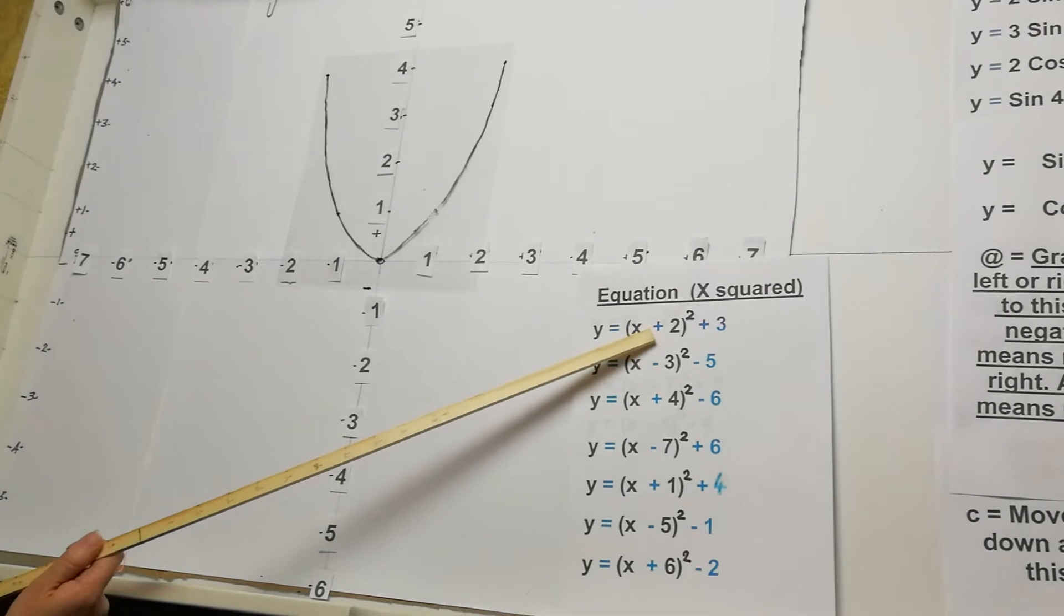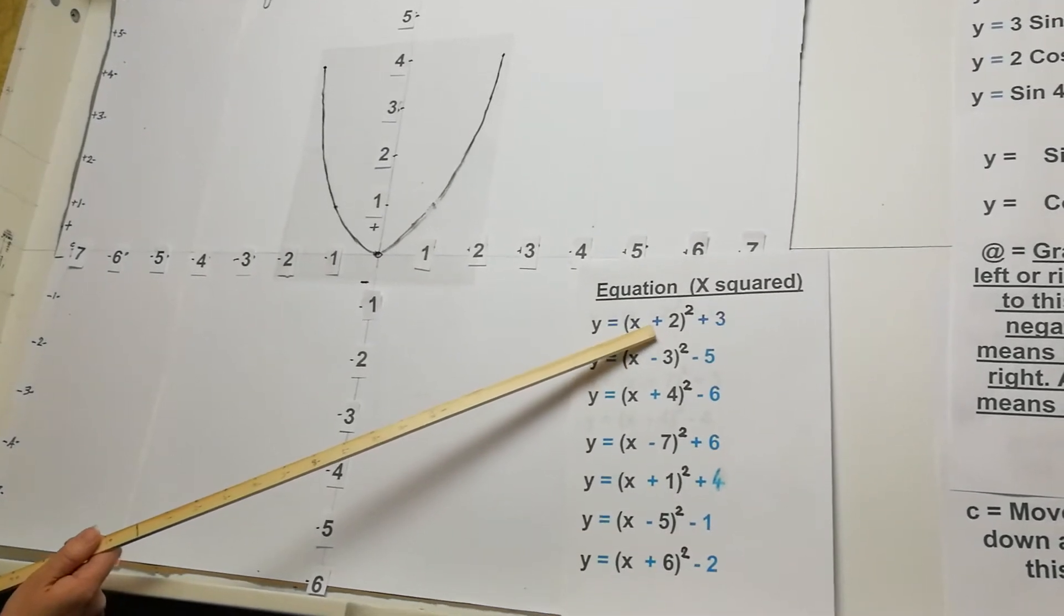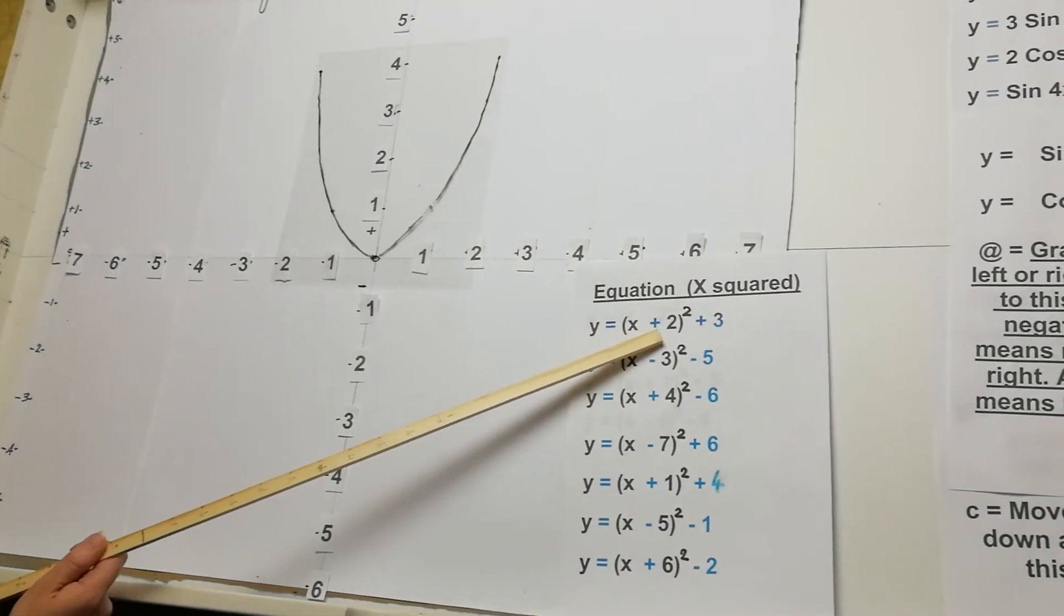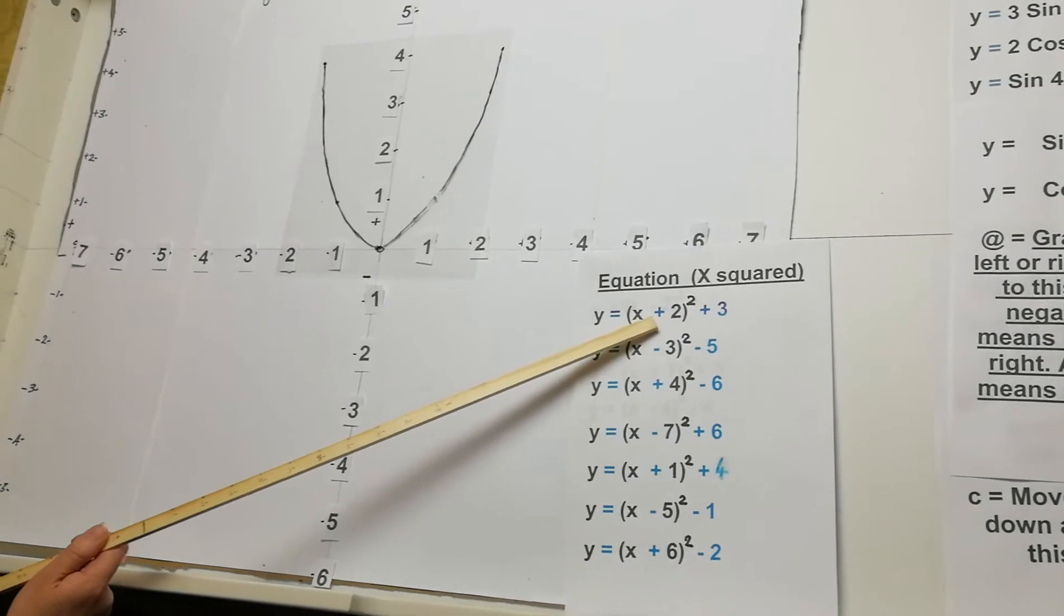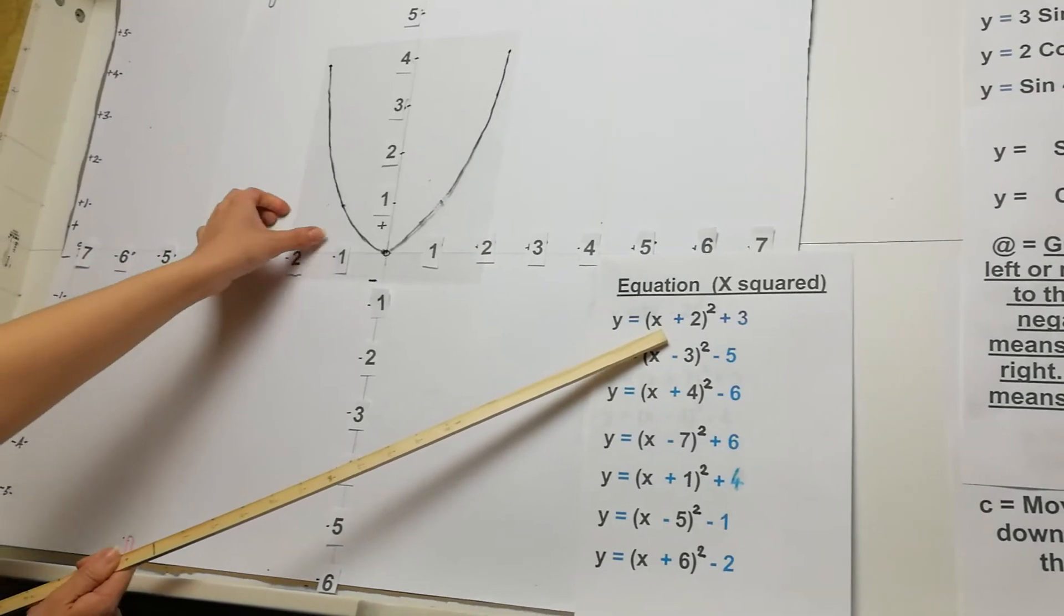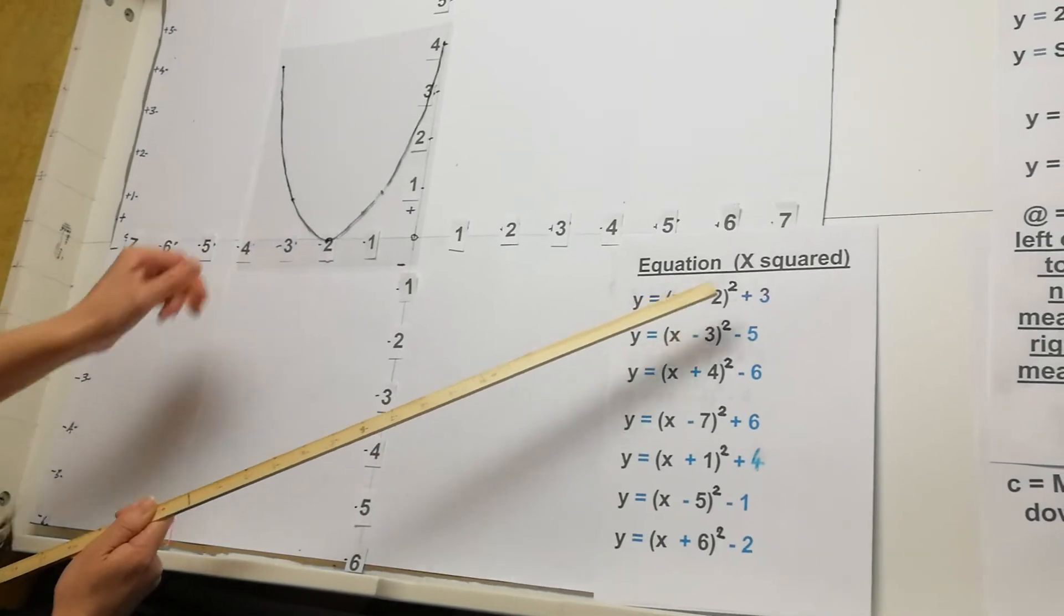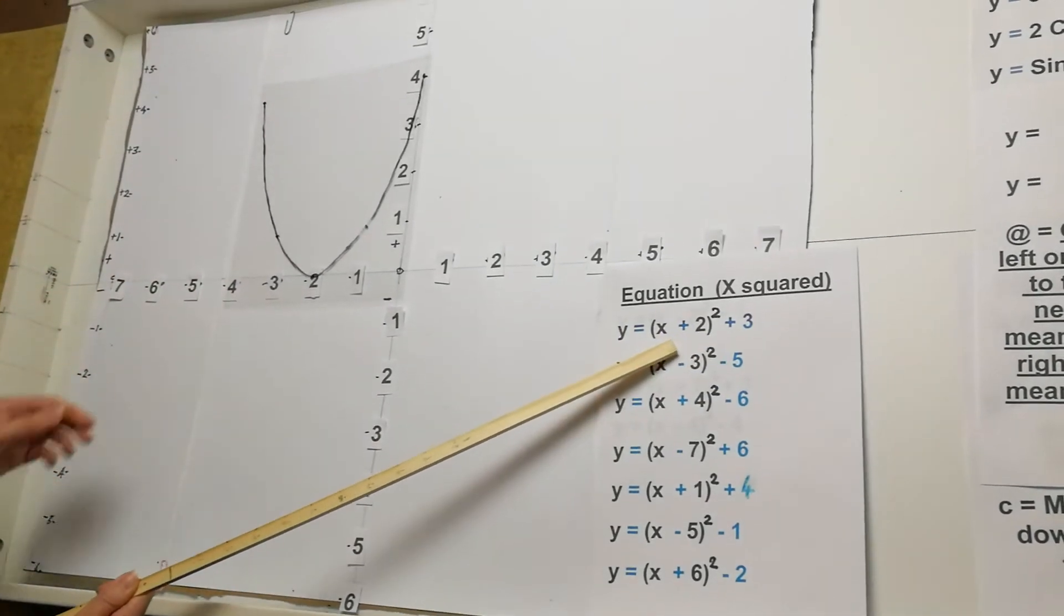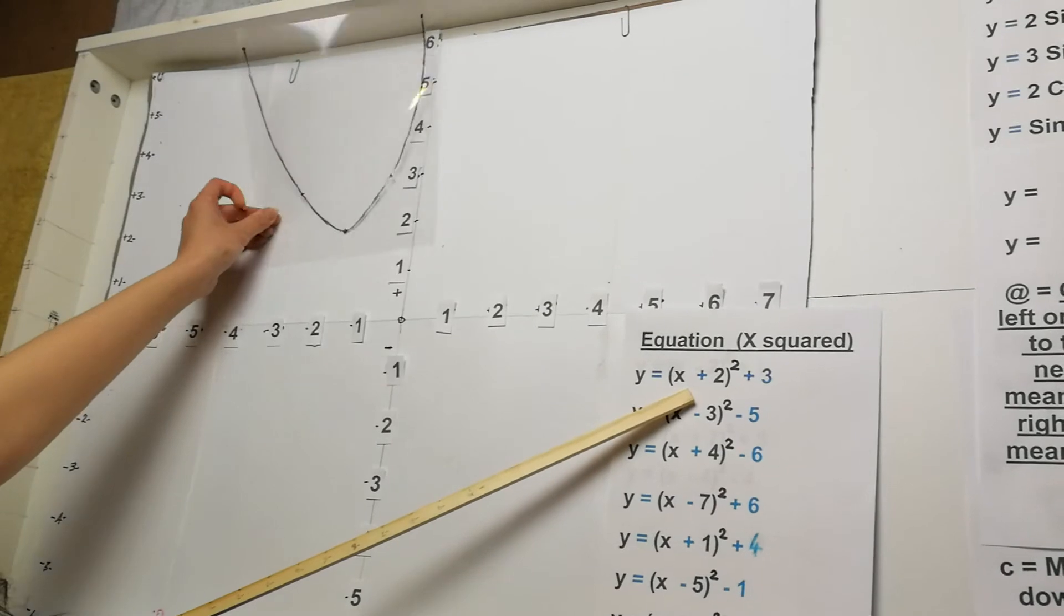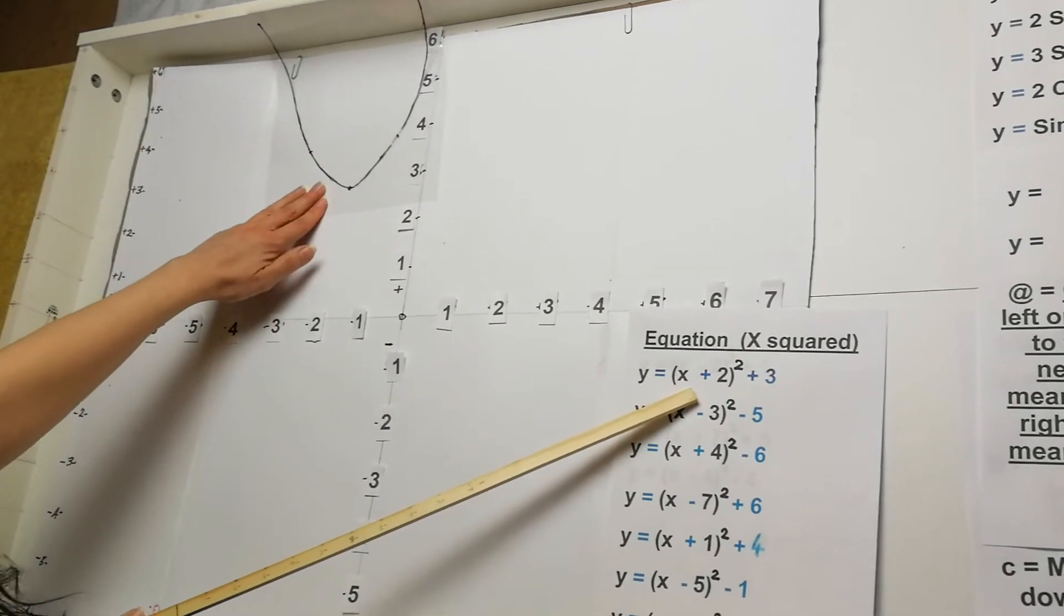So first of all, we've got x plus 2. So it means we're moving 2, but then the positive sign means moving to the left. So you're always the opposite. So it's moving to the left by 2. And then that plus 3 means moving up by 3. So it's going to sit slightly like that.